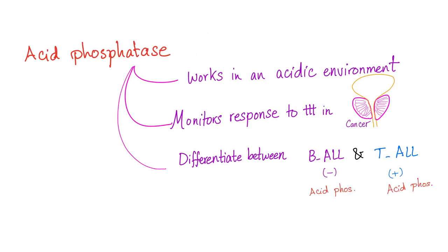Acid phosphatase is a phosphatase that works well in an acidic environment. What is a phosphatase? It's an enzyme that dephosphorylates compounds, which means it removes a phosphate group.